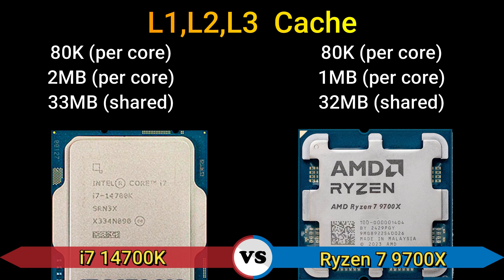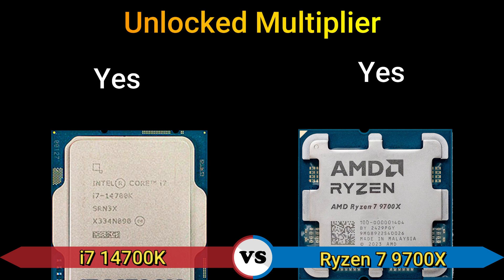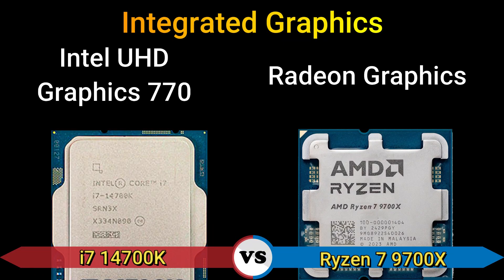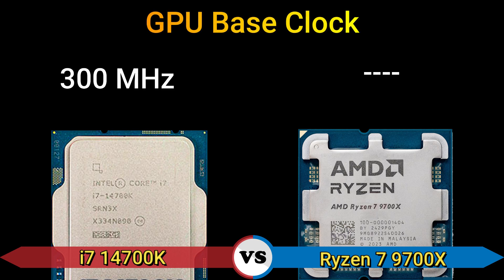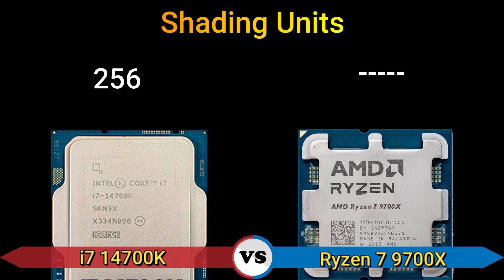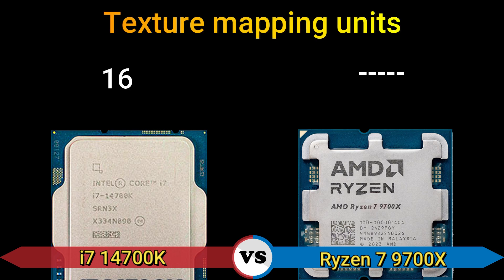Part 3 — integrated GPU. Intel UHD Graphics 770 and Radeon Graphics. GPU base clock: 300 MHz. GPU boost clock: 1600 MHz and 2200 MHz. Shading units: 256. Texture mapping units: 16. Render output units: 8. Execution units: 32.